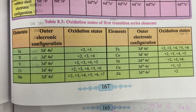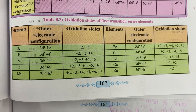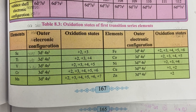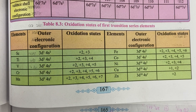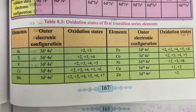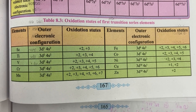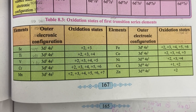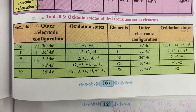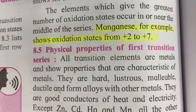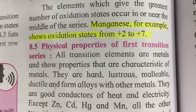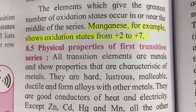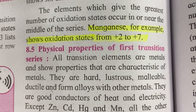Which one of the following elements shows the maximum oxidation numbers from +2 to +7? That is manganese. Manganese shows oxidation states from +2 to +7.